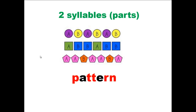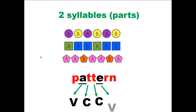Now let's get back to the word. How many vowel sounds does it have? It has two vowel sounds, so this word is made up of two syllables. The pattern is: first vowel sound, another consonant, another consonant, and a vowel sound — the VCCV pattern. It should be divided between the consonants. The first syllable will be 'pat,' the second syllable is 'tern,' and the whole word is pattern.